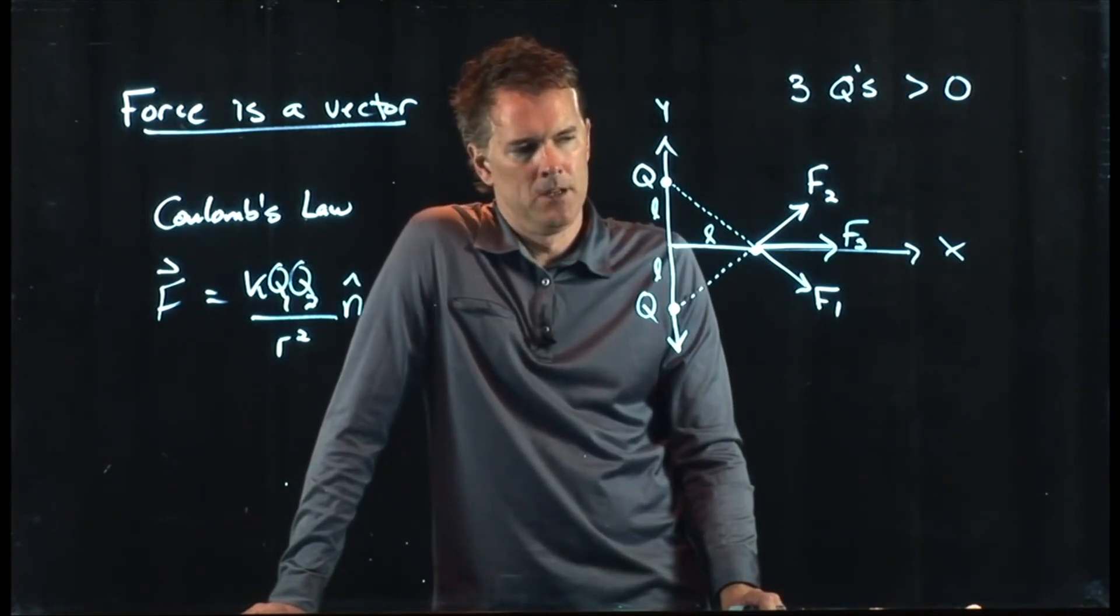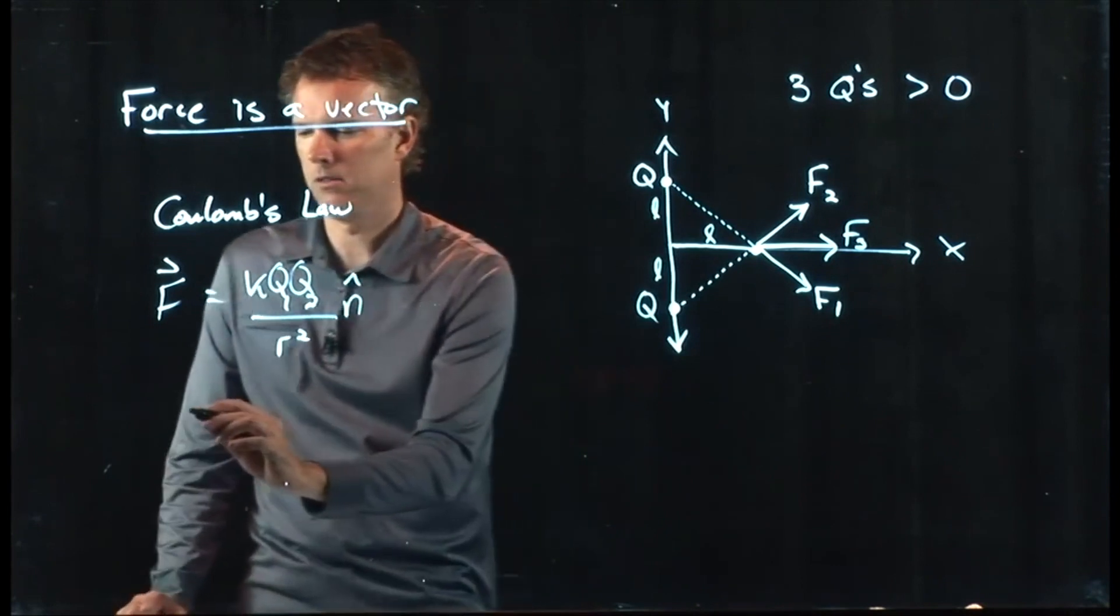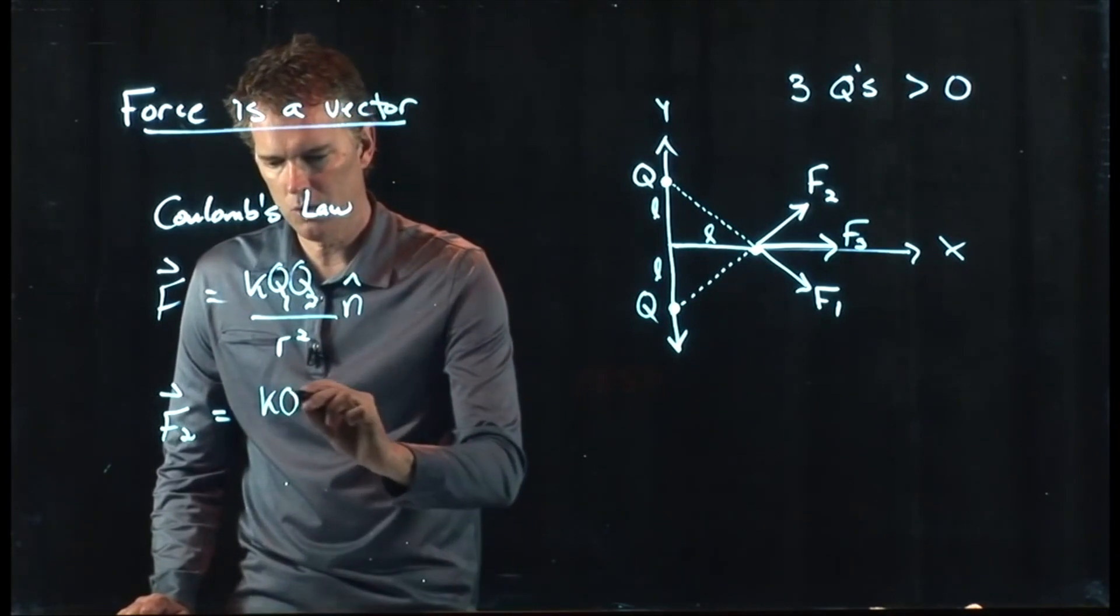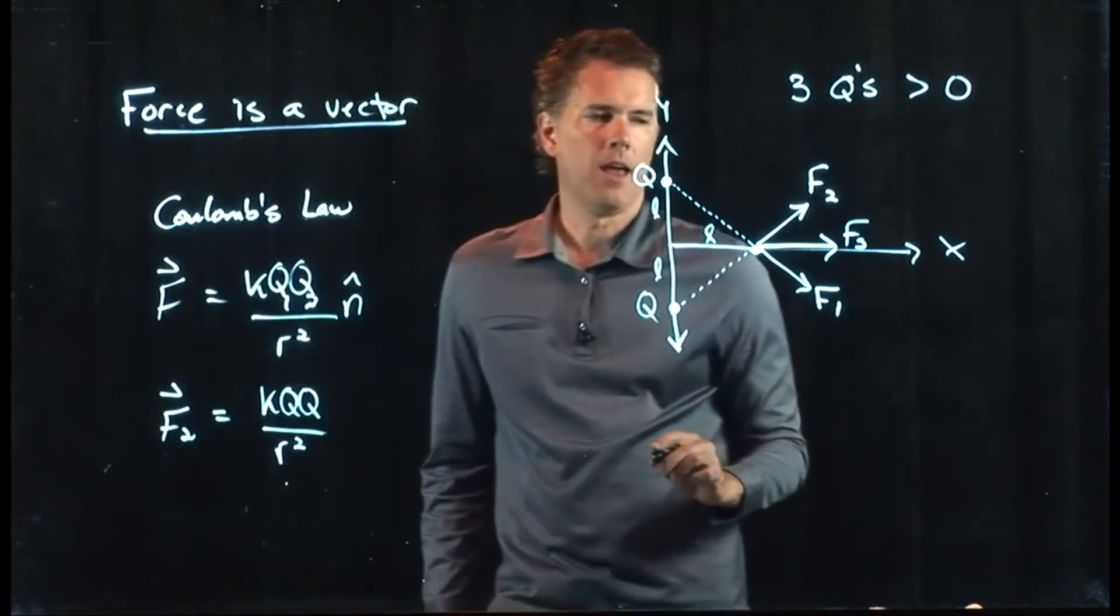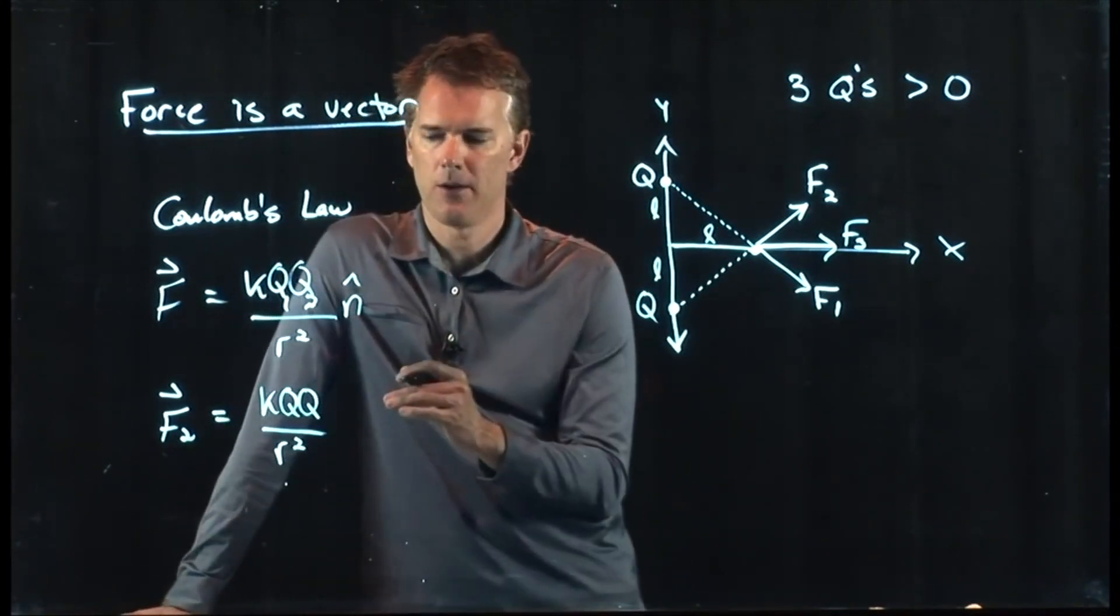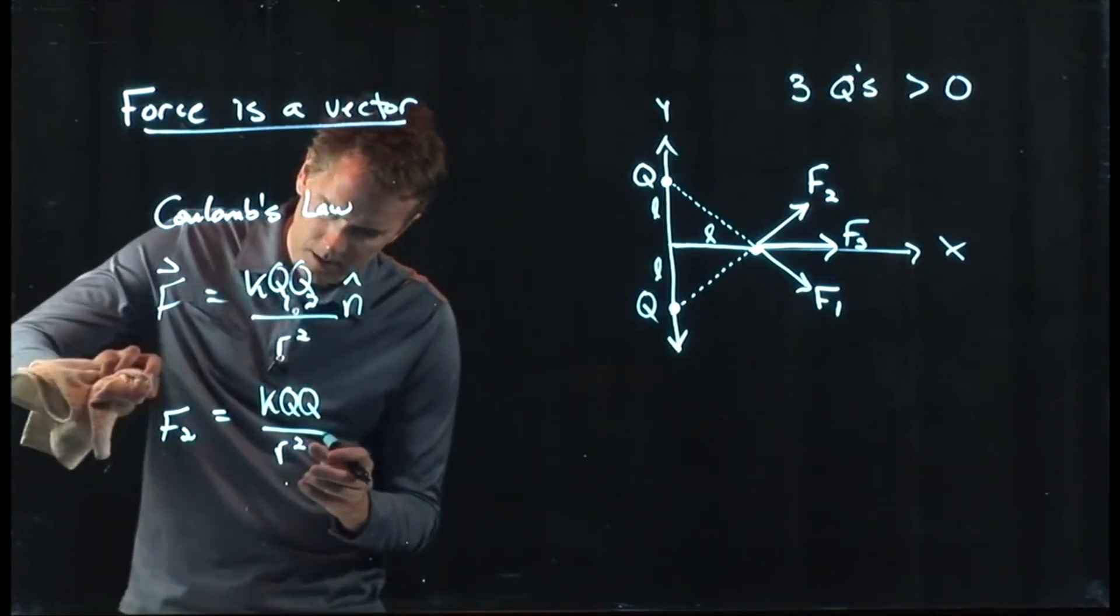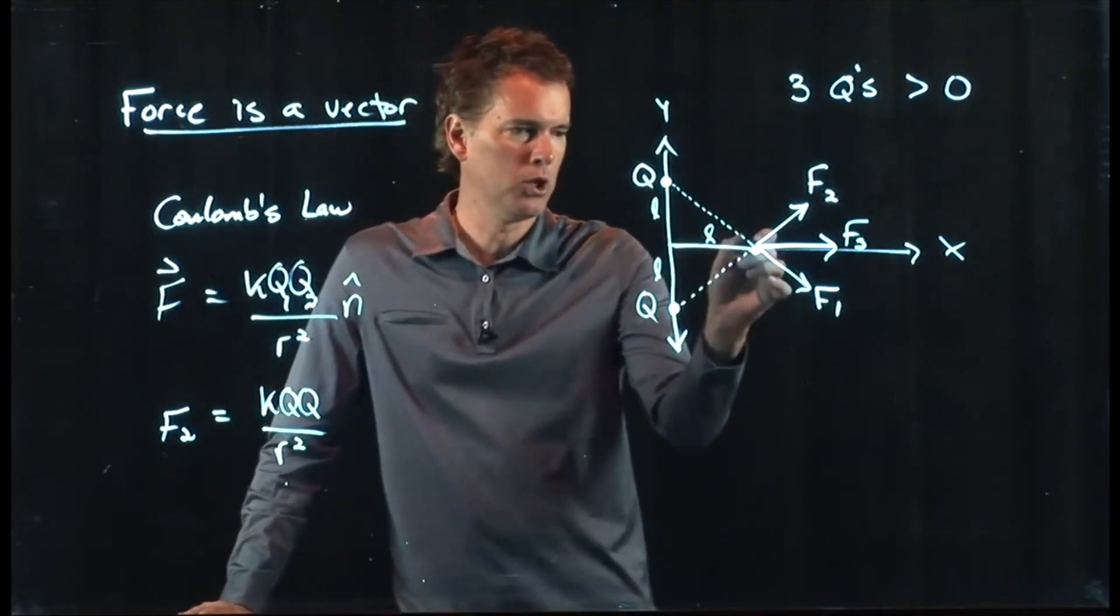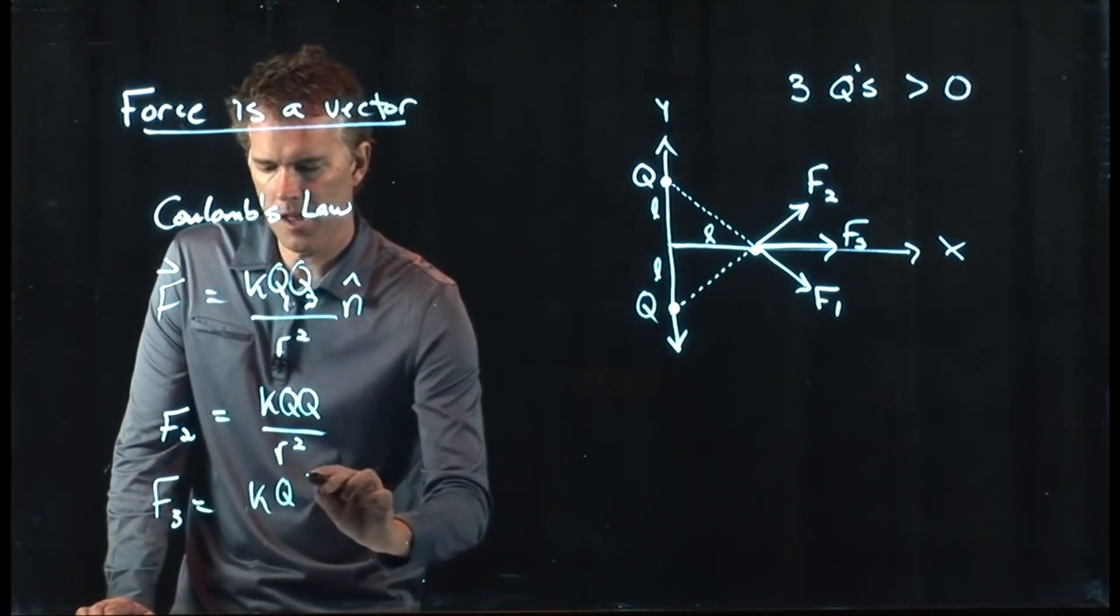First off, let's take a look at F2. F2 is the following. It is KQQ over R squared. And then there's going to be some direction associated with it. And we're not exactly sure how to write the direction yet. So let's make this the magnitude of F2. That's what the magnitude of F2 is. It's KQQ over R squared. F3 is, of course, going to have the exact same magnitude.